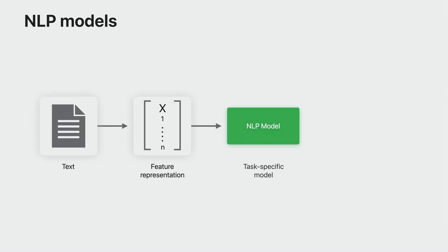Let's start with some background. Schematically, NLP models generally have a similar flow. They start off with text data, then have an input layer that converts it to a numerical feature representation upon which a machine learning model can act, and that produces some output. The most obvious examples of this from previous years are the CreateML models that are supported for text classification and word tagging.